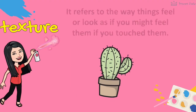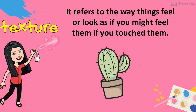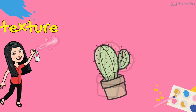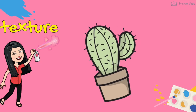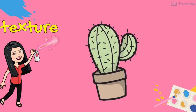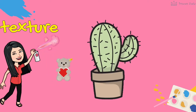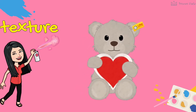Fifth is texture. Texture plays to our sense of touch. It refers to the way things feel, or look as if you might feel them if you touched them. Like the cactus — it is drawn covered in short, thick lines which represent its prickly spines or sharp spikes. These lines make the object look prickly, so it makes you think that you might get hurt if you touched it. The bear below was drawn with zigzag lines. These zigzag lines make the object look fluffy.